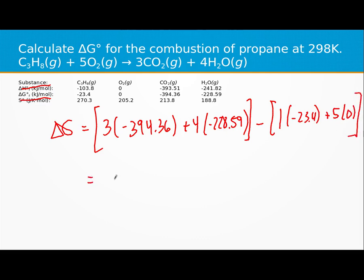When I throw this into a calculator, I get negative 2074.04, and since we only have one decimal place there, we're going to lose that decimal. That is kilojoules.